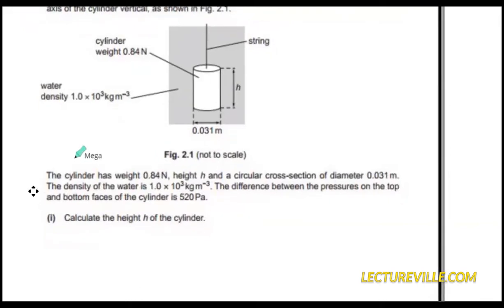The cylinder has a weight of 0.84 newtons, height h, and a circular cross-section diameter of 0.031 meters. The density of the water is 1000 kilograms per meter cubed. The difference between the pressure on the top and bottom faces is 520 pascals. This difference means that the pressure of this much of liquid, this much of liquid, is 520 pascals.